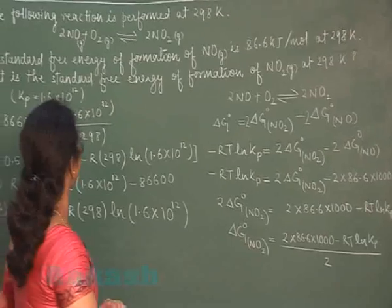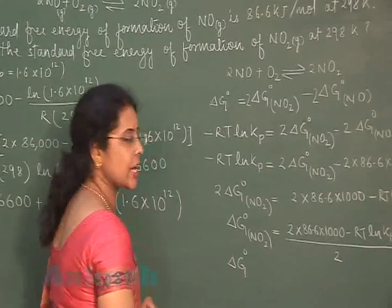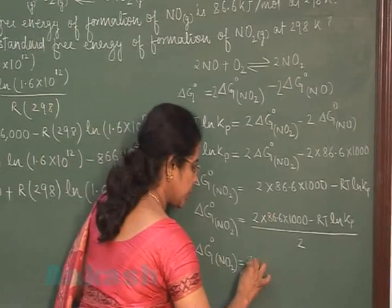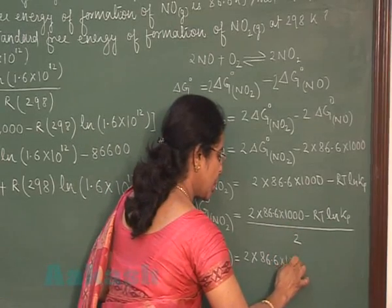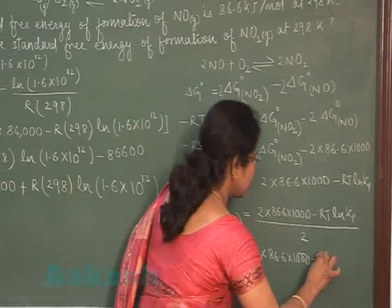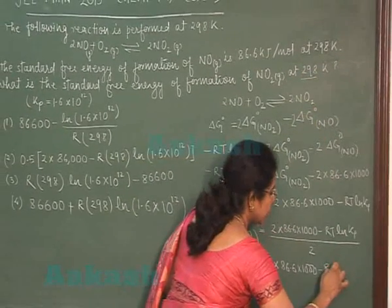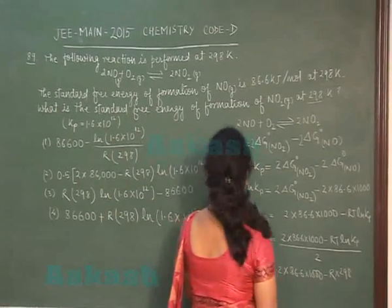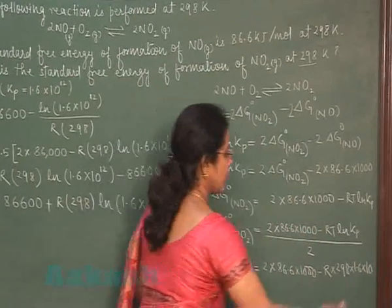Now in this question, see Kp's numerical value is given. So I have written the expression delta G0 formation of NO2 is equal to 2 into 86.6 into 1000 minus RT. R's value as it is. T is temperature. Question mentions 298. Log Kp. Log Kp value mentioned in question is 1.6 into 10 raise to power 12.